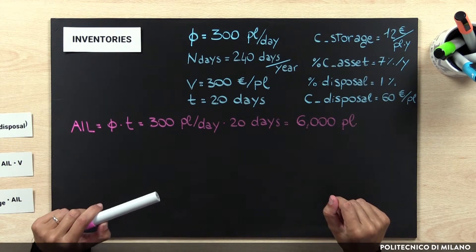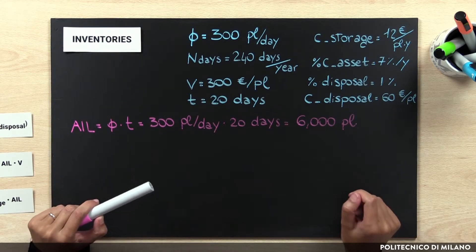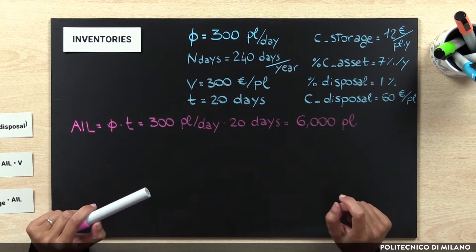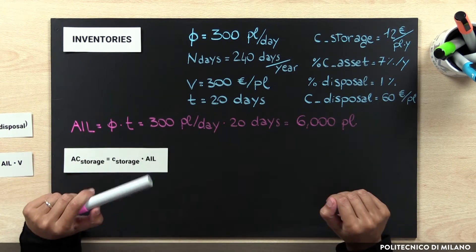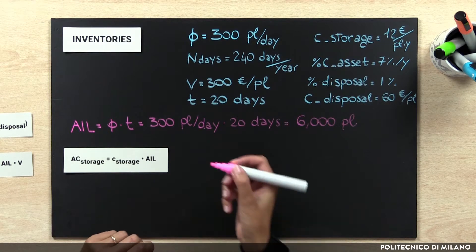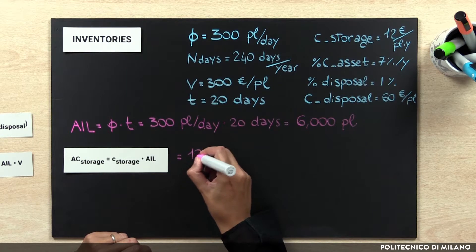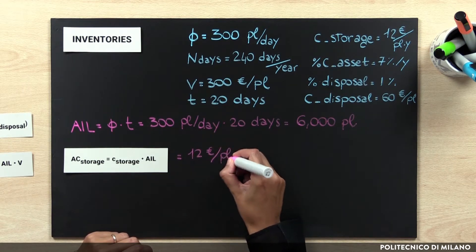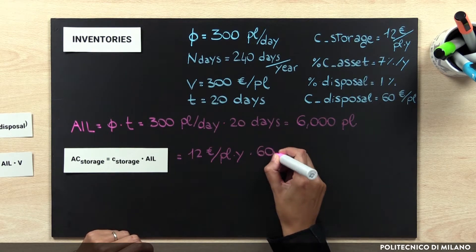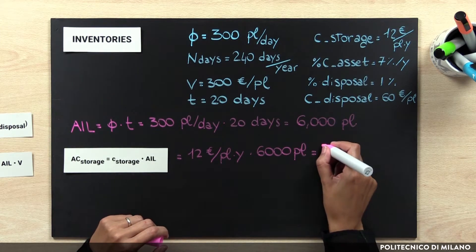The physical storage costs are related to the amount of inventories, whereas the asset costs and the obsolescence costs also depend on the stock value. The annual cost of storage is equal to the unitary cost of storage multiplied by the average inventory level: 12 euros per pallet load per year multiplied by 6000 pallet loads, giving 72,000 euros per year.